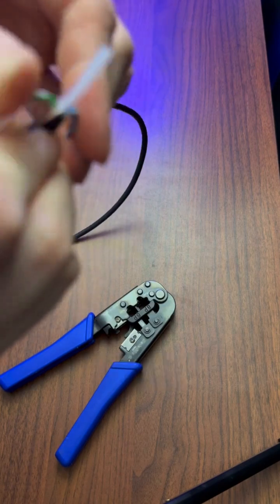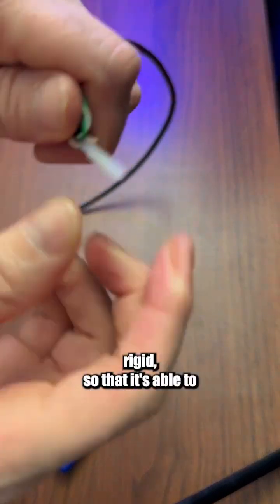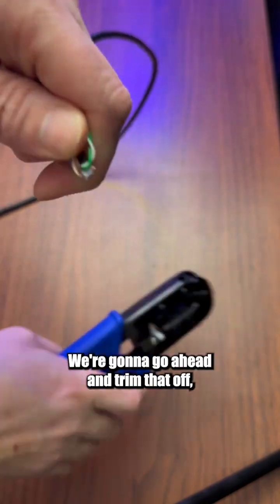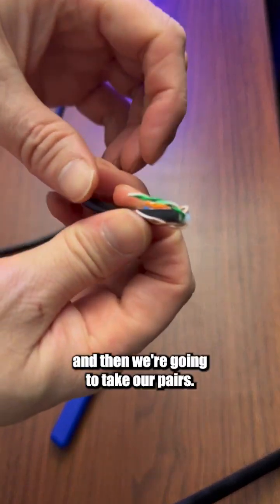This little plastic piecing here is simply used to keep the cords rigid so that it's able to go through corners and such with ease. We're going to go ahead and trim that off and then we're going to take our pairs.